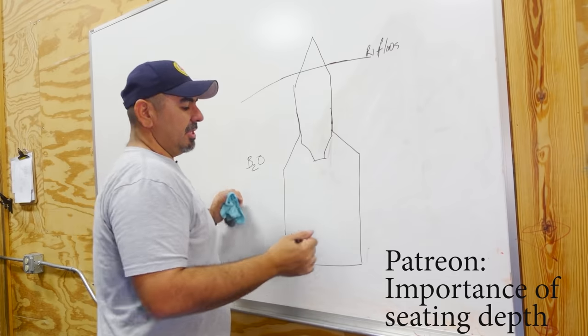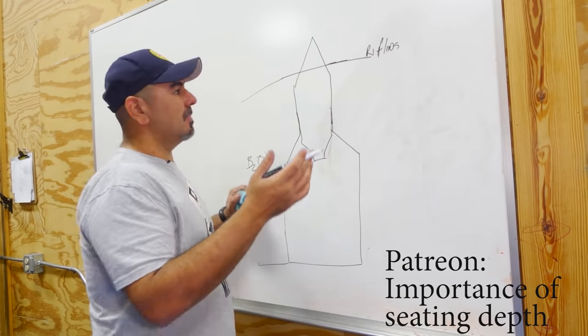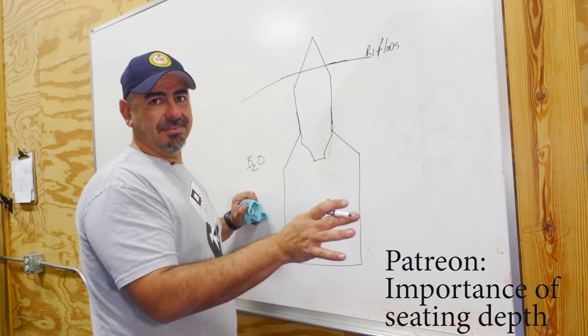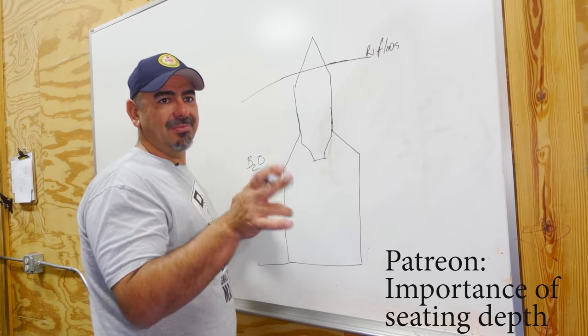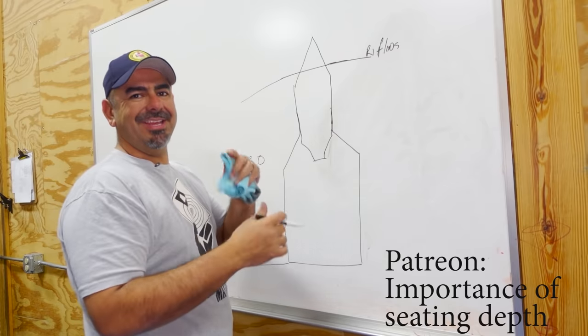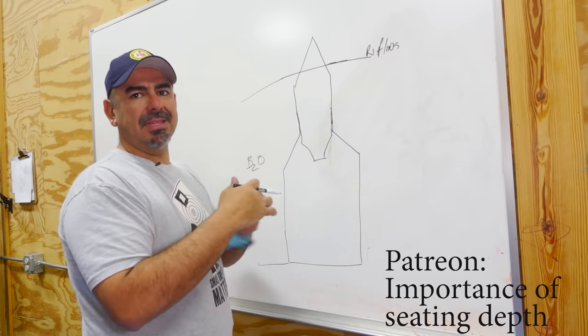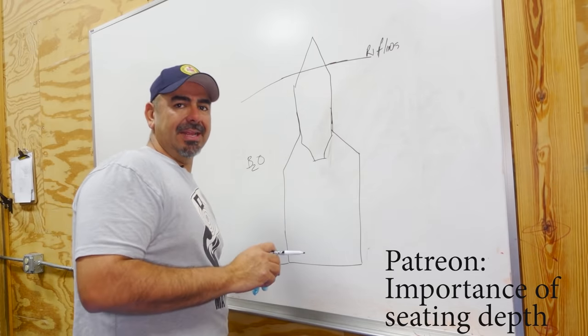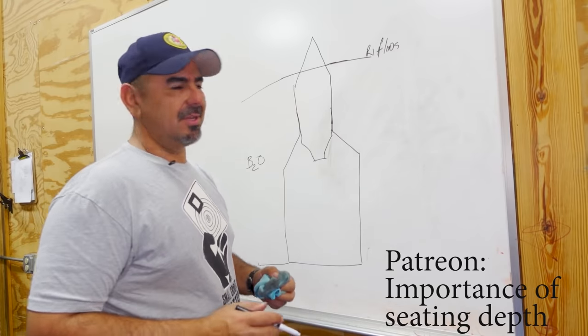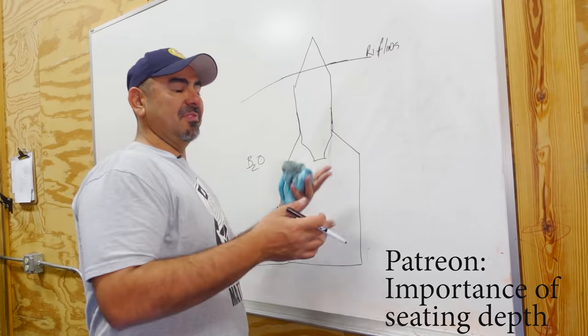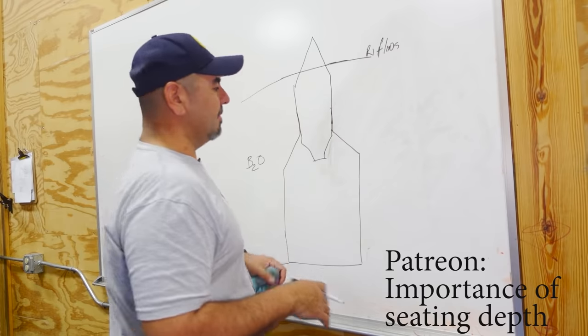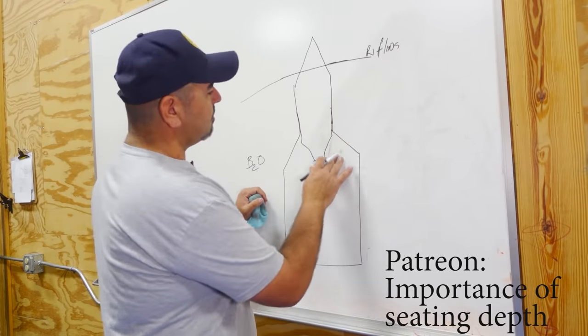Once you have your comparator sized the correct way and you get your jam measurement, it's going to be the same for any—for example, if it's a six millimeter, it's going to be the same for all six millimeters. The reason it changes when you go from one bullet to the next is because they have different profiles and you're not measuring at the point where it contacts the rifling. Once you have the correct size comparator, it translates to any six millimeter bullet.